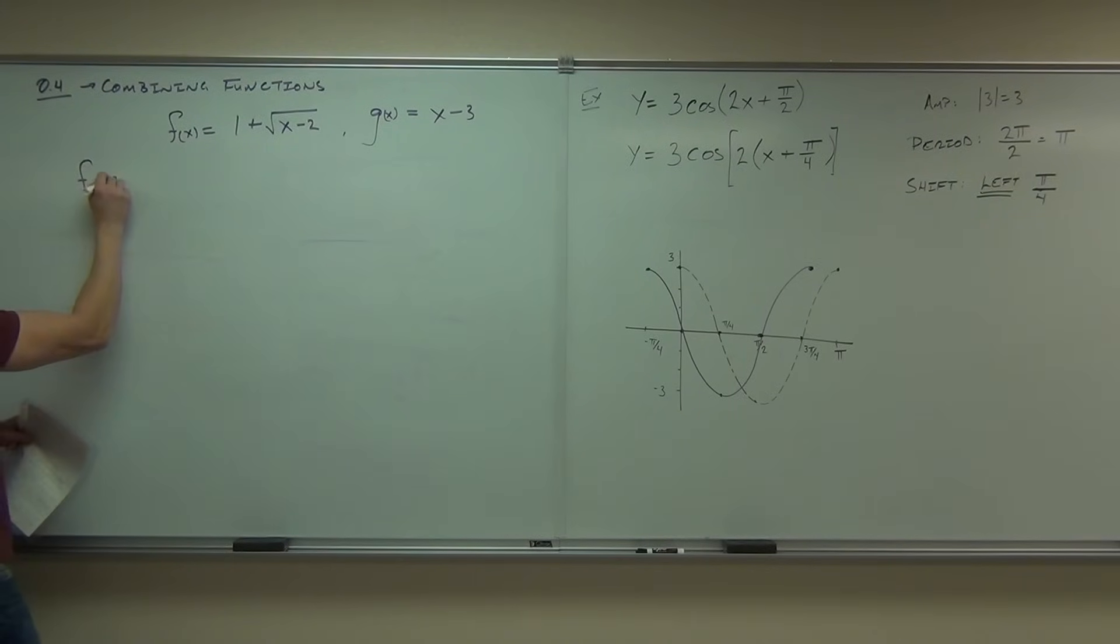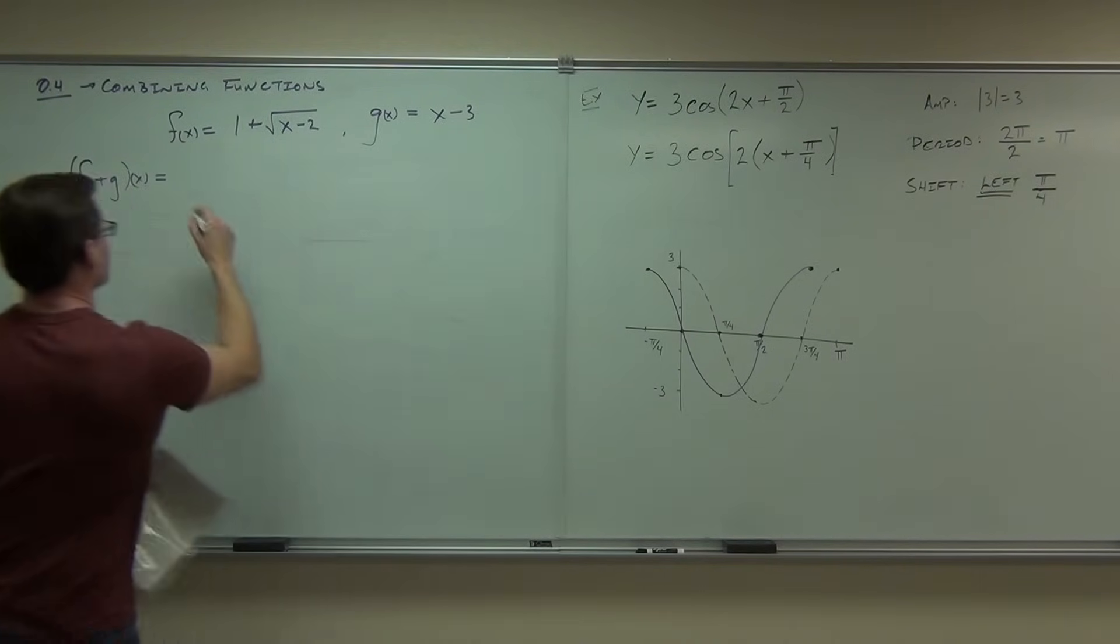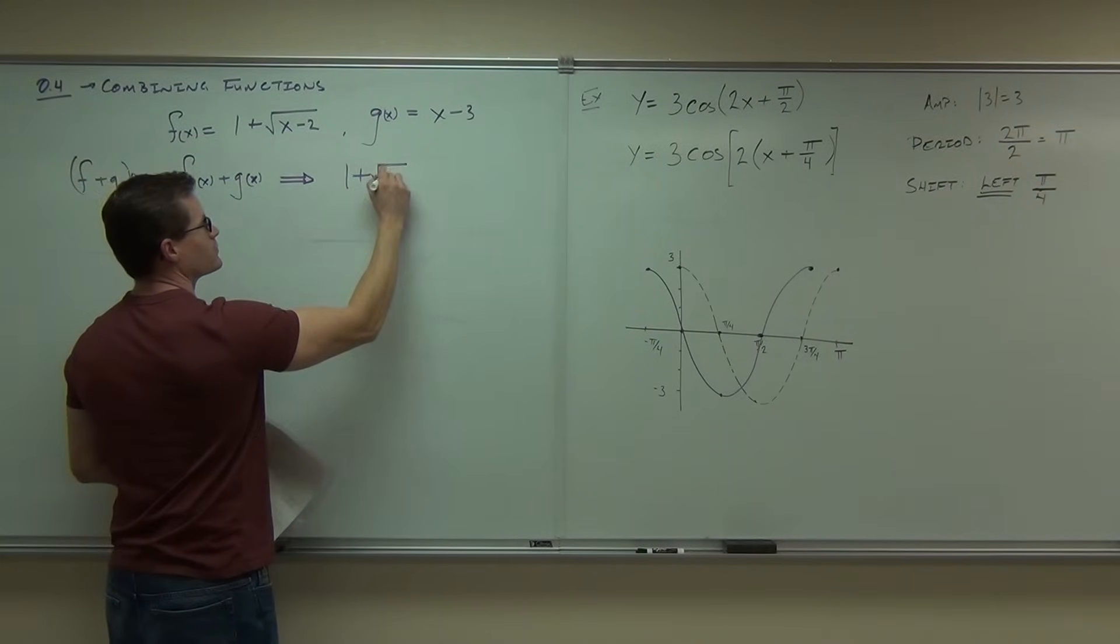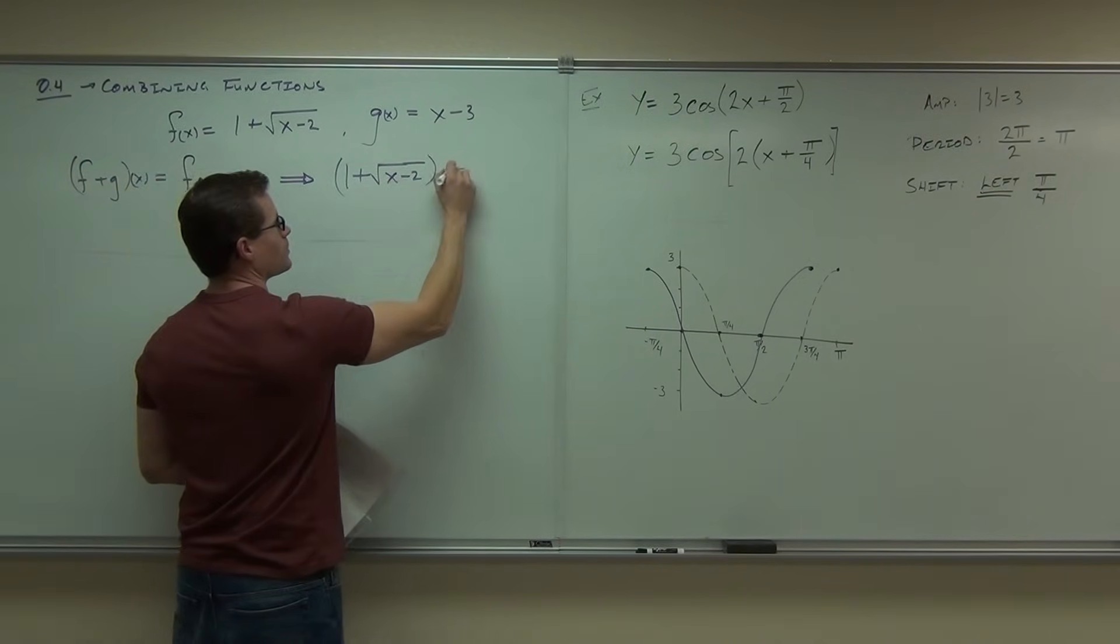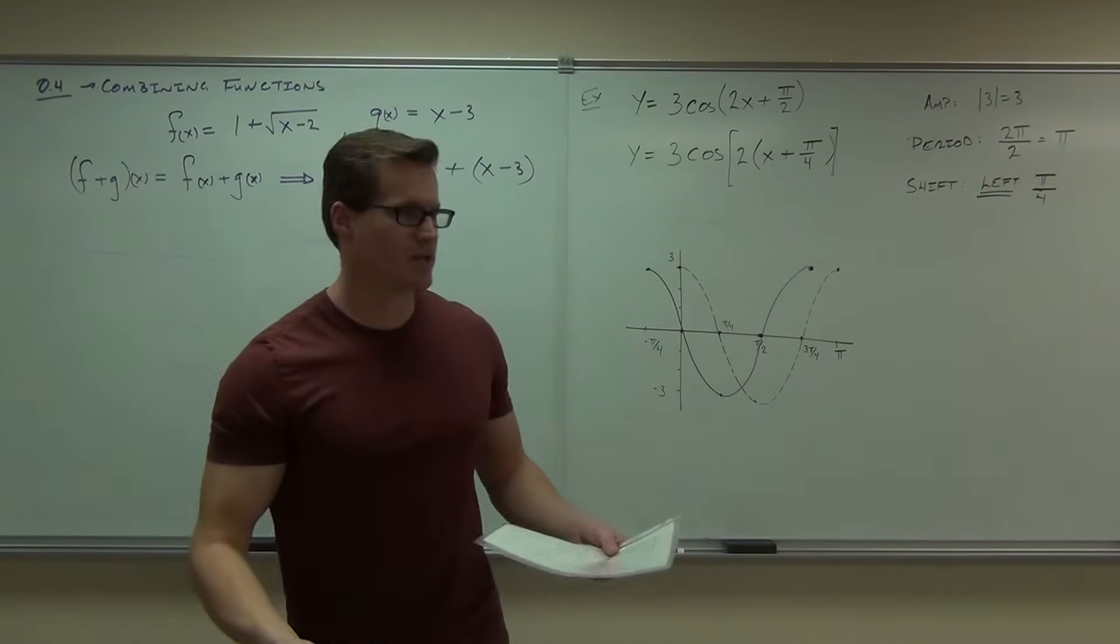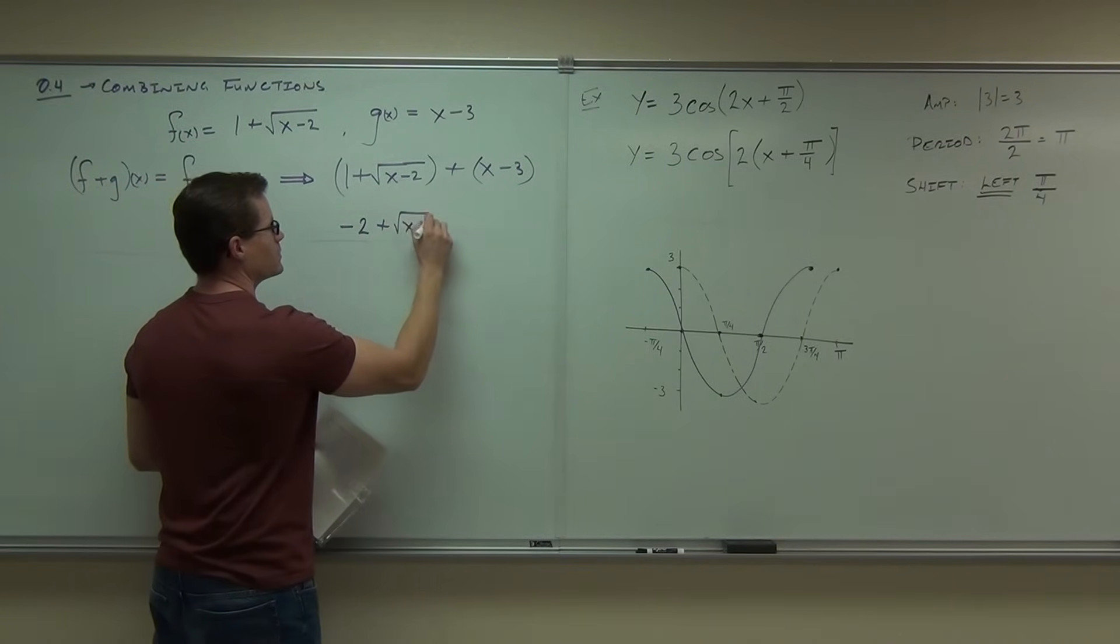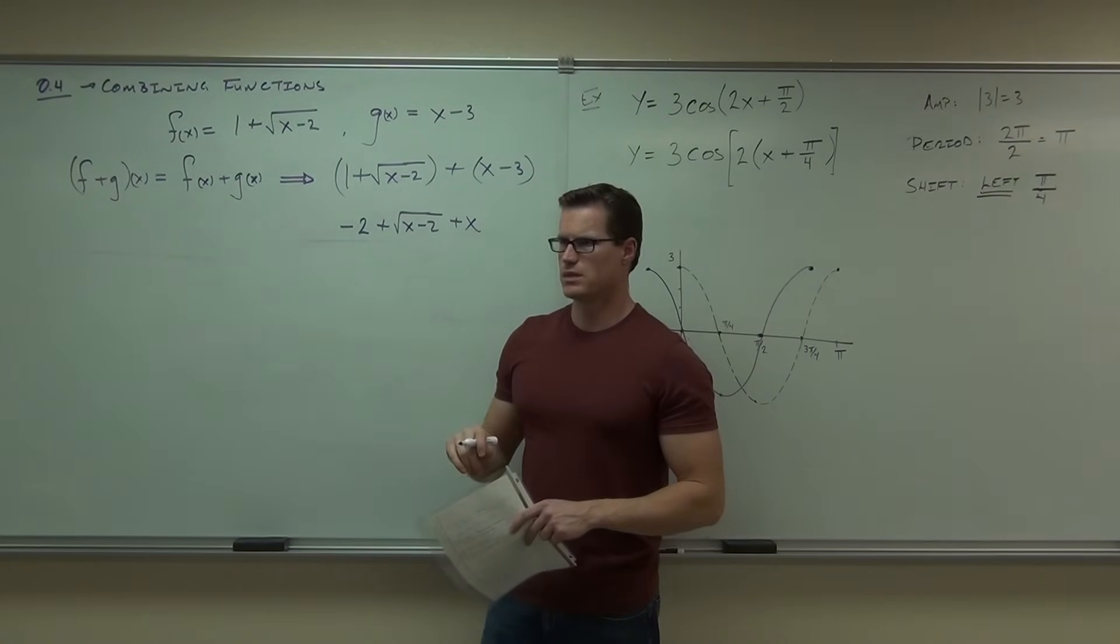If we want f plus g of x, what that means is we're just going to simply add the functions together: f(x) + g(x). In our case, that means we'd have 1 + √(x-2) + (x-3). You'd get rid of your parentheses by distributing if you had to, and then combine some like terms. In our case, we should be getting -2 + √(x-2) + x. Can you verify that that's the right answer?